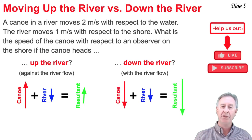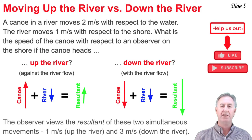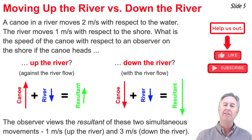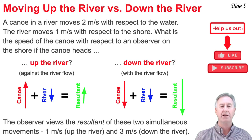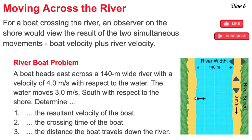In the case of moving down the river, it's moving with the river flow, so the river velocity adds to the boat's velocity and an observer on the shore would observe a 3 meters per second velocity for the boat. In each of these cases, the observer on the shore is observing the resultant velocity of these two simultaneous velocities — 1 meter per second north for paddling up the river and 3 meters per second south when paddling down. Now let's consider a boat that heads directly across a river where the river is moving with respect to the shore, so an observer on the shore would observe the resultant of these two simultaneous movements.